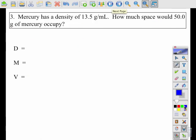The next one is number three. So again, I'm going to underline what I'm given, circle what I'm trying to find out. So it says mercury has a density of 13.5 grams per milliliter. How much space would 50 grams of mercury occupy?